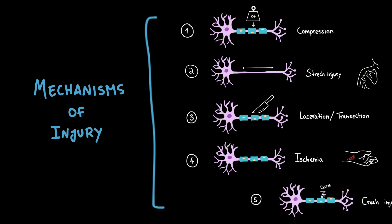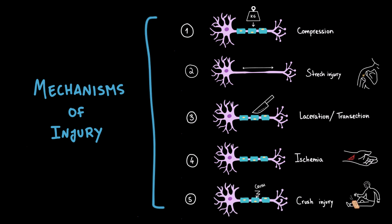And finally, there's the crush injury. Here, the nerve is compressed and squashed with significant force, for example, by a heavy object or machinery accident.